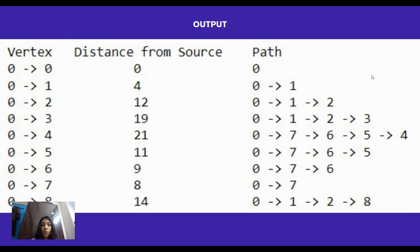The path for vertex 0 is just the vertex itself. Vertex 1 has a distance of 4 and the path is 0 to 1, indicating the shortest path from vertex 0 to vertex 1 is through a direct edge. Vertex 2 has a distance of 12 and the path is 0 to 1 to 2, indicating the shortest path from vertex 0 to vertex 2 goes through vertices 0 and 1. It continues in a similar format for all vertices, showing their respective shortest distances and paths from the source.